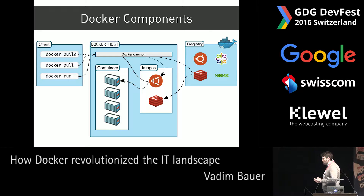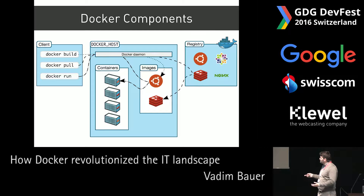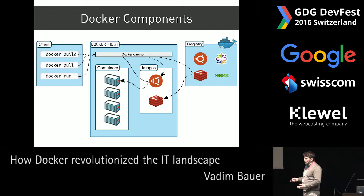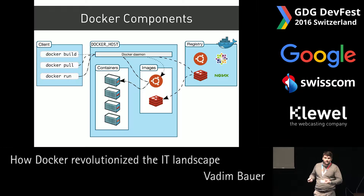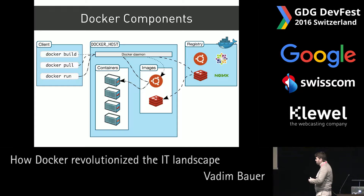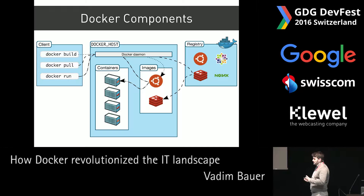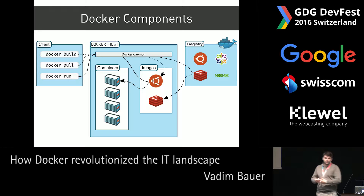When we talk about Docker, we actually mean various different things. We mean the Docker daemon, which is responsible for starting, stopping, and running the containers, and also for getting and building the images. We also mean the Docker client — the command-line client — that communicates with the daemon and triggers it to start a container, stop a container, create a network, and so on. And we have the registry, which is not part of Docker itself but is very tightly coupled to Docker, because it provides a repository where images that I or someone else creates can be taken and reused.